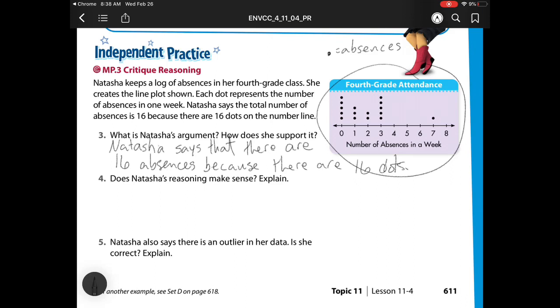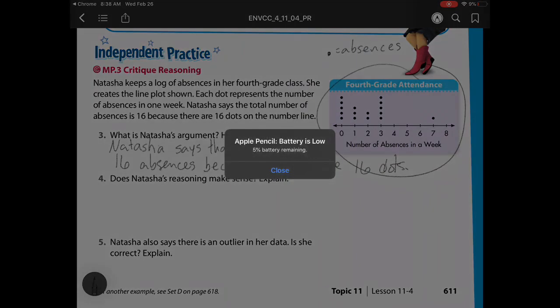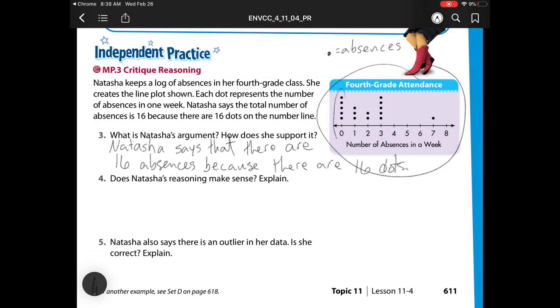So now the question is, does her reasoning make sense? Let's check. We have 0 absences here. Here we have 1, 2, 3 absences. Here we have 2, 4 absences. Here we have 3, 6, 9, 12, 15 absences. And here we have 7 absences. So remember, these are absences in one week. So in one week, there is actually a time where she was absent 7 times.